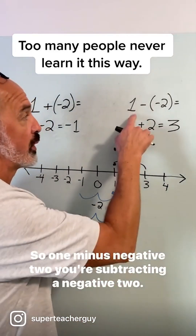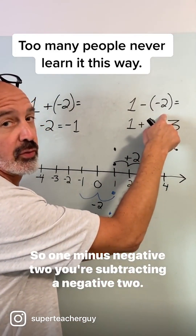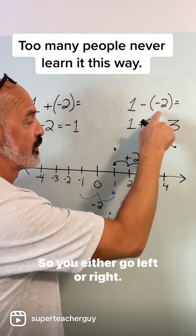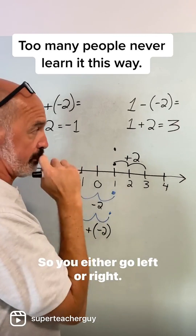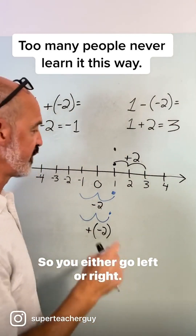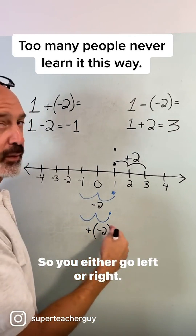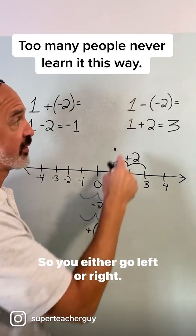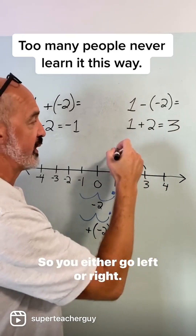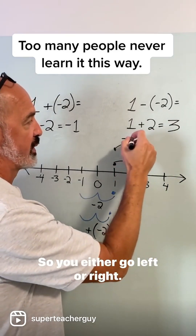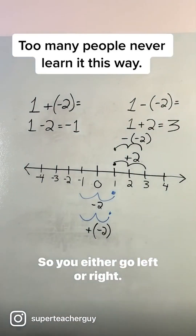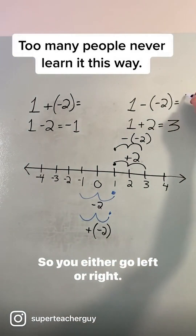So one minus negative two — you're subtracting a negative two. You either go left or right; those are the only two choices. If adding a negative two went to the left, subtracting a negative two has to be the opposite — it's going to the right. So you get three.